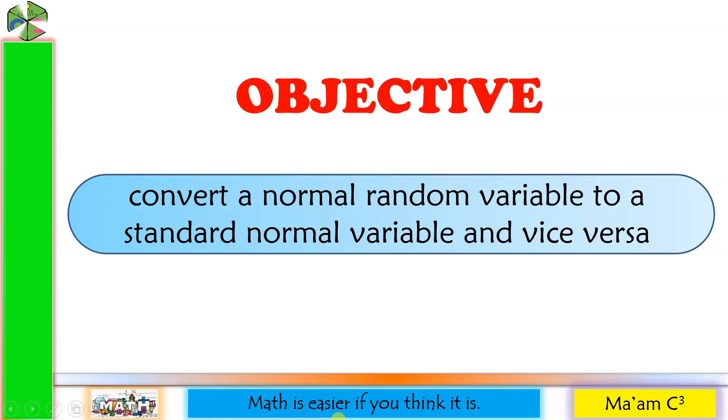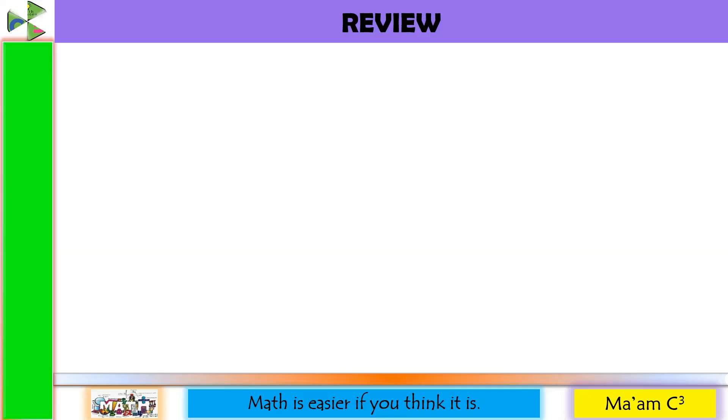Our objective in this lesson is to convert a normal random variable to a standard normal variable and vice versa. Let's have a quick review of our previous lesson. Find the area to the right of Z equals negative 1.83.